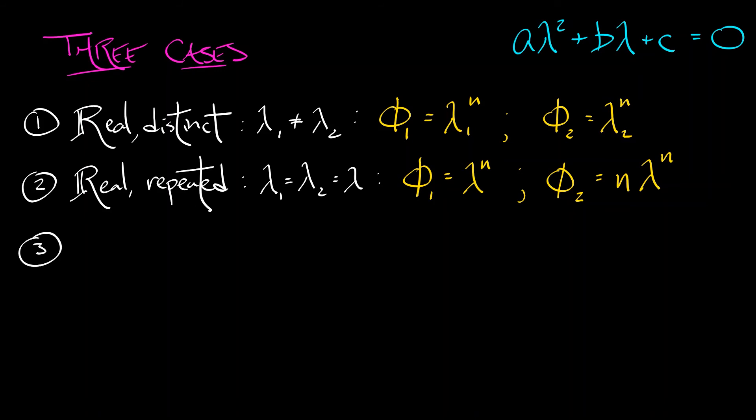Okay, third case: if you have complex conjugate roots. If your lambdas are of the form α plus or minus iβ, then what do we do? Well, this one gets a little more complicated and it's best to express things in terms of the polar representation of these complex numbers.